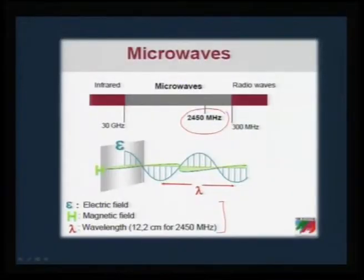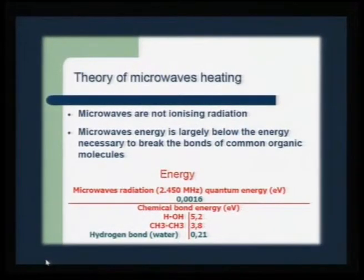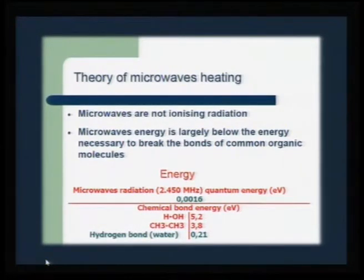When electromagnetic radiation interacts with molecules or materials, there will be some response of different order. We will be using the electrical vector of the microwave radiation to interact with matter. As far as the theory of microwave heating goes, microwaves are not ionizing radiation — they are soft. This is not ionizing radiation, but it can largely be used to excite or lift the potential energy of molecules.